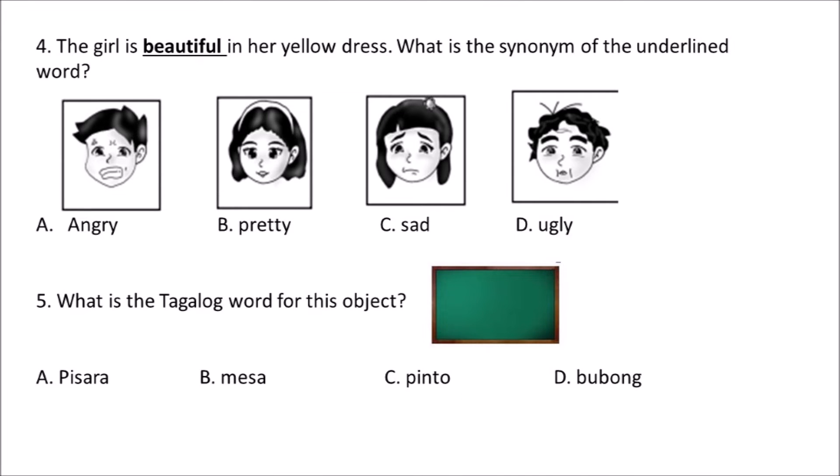Number four: The girl is beautiful in her yellow dress. Number five: What is the synonym of the underlined word? A. Angry B. Pretty C. Sad D. Ugly. Number five: What is the Tagalog word for this object? A. Pisara B. Mesa C. Pinto D. Bubong.